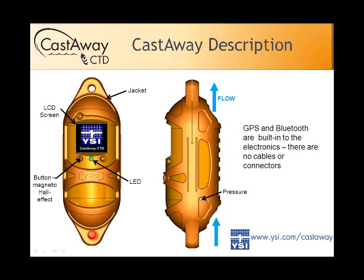This is a flow-through sensor — the cell is actually inside, with nothing protruding for things to get caught on. The buttons are magnetic Hall-effect — there's no physical actuation. The button isn't actually pushing in; you just get near it with the magnetic stylus. It is recessed so you don't accidentally trigger one of those buttons, but you just need to get the magnetic stylus nearby.